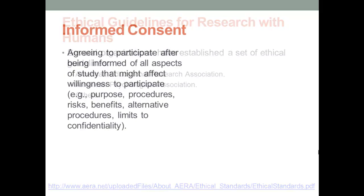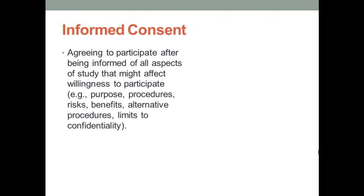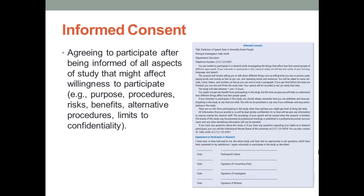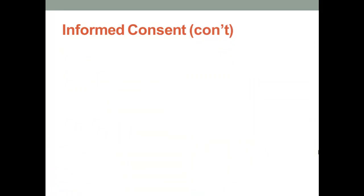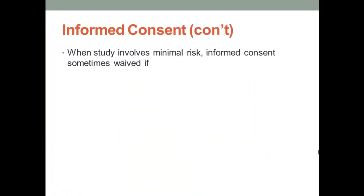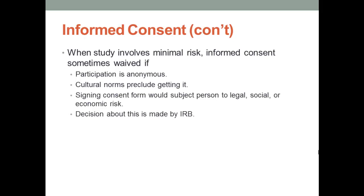Participants must give what is called informed consent before they can participate in any study. That means potential research participants must be provided with information that enables them to make an informed decision as to whether they want to participate in the research study. An actual consent form is shown in Exhibit 5.3. Table 5.2 outlines the information that you, the researcher, must put in a consent form so that potential participants are able to provide informed consent. There are a few cases where an IRB will waive informed consent — if the study proposes minimal risk and participation is anonymous, cultural norms preclude getting consent, or signing the consent form itself would subject a person to legal, social, or economic risk.